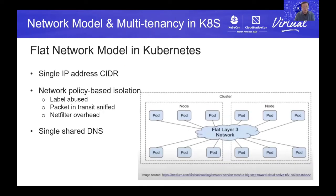As most of you already know, the current network model for Kubernetes is a flat model. It's a single address space and they share a single DNS. By default, every pod or container can communicate with every other pod or container in the cluster, so by default there's no multi-tenancy from a network perspective. Kubernetes introduced network policy to isolate containers or pods from each other. However, network policy is not as secure or as strong as a virtual network can be. For example, network policy does not prevent packet sniffing — putting a listener where traffic is passing by and extracting sensitive information from the packets.